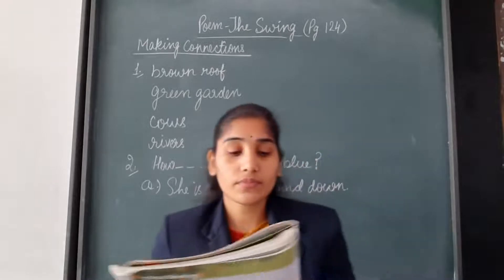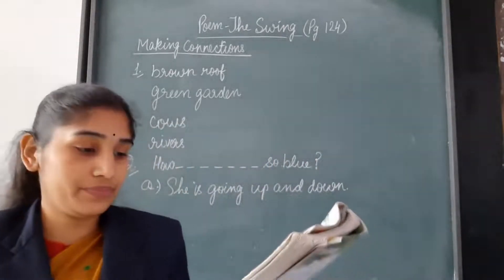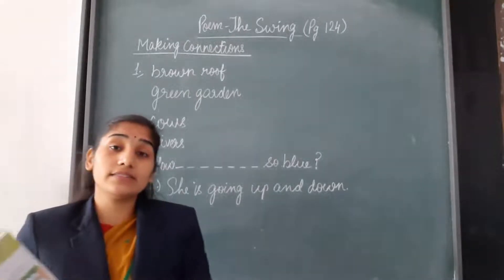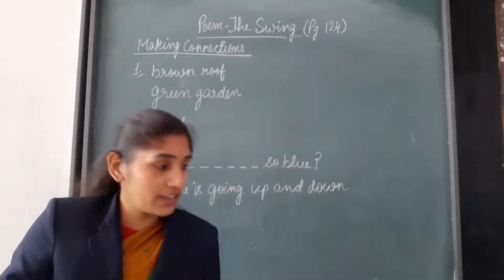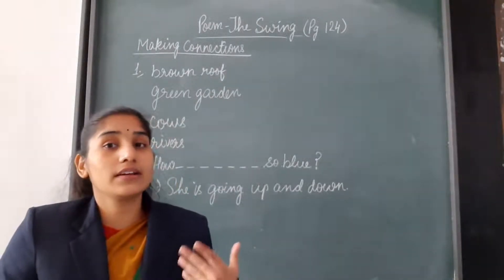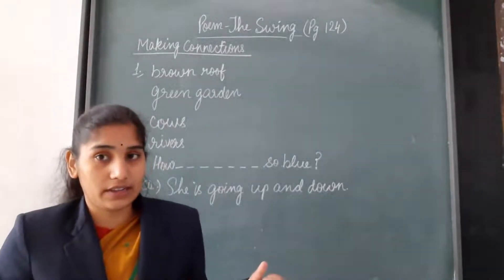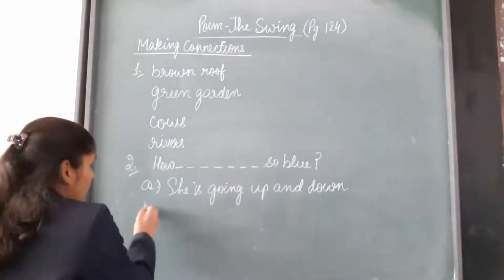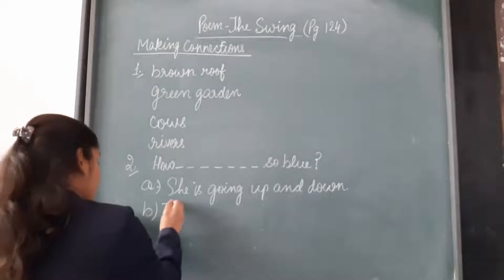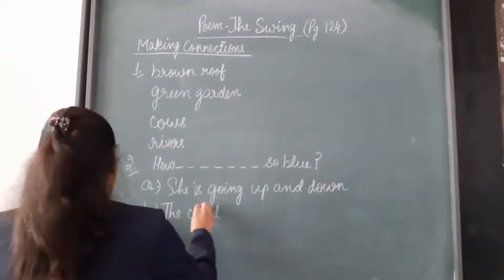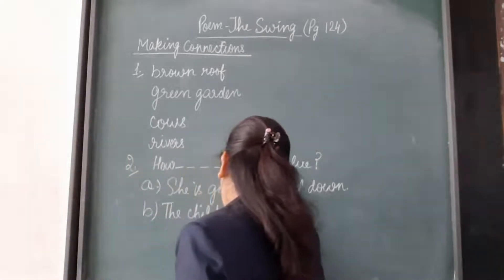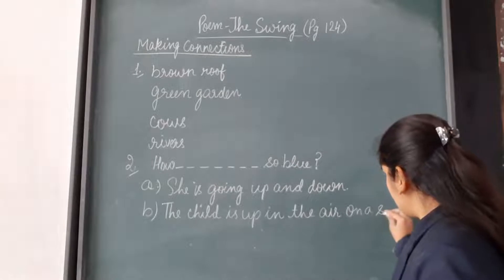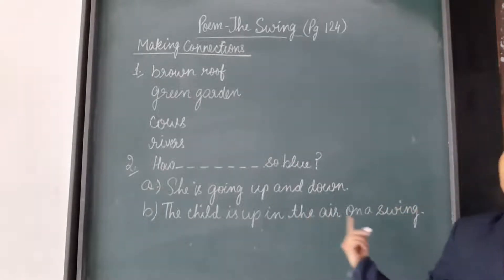Now let's move to part B. A child is speaking in the poem. How is the child up in the air? The child tells us that when he is up in the air, he can see the green garden, the brown roof and cows, the river and many other things. How did he go up? The answer would be: the child is up in the air on a swing. This is the answer for part B.